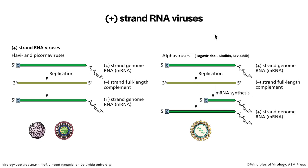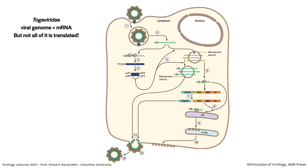The other set of plus-stranded RNA viruses I want to discuss is one where a subgenomic mRNA is actually made — the alphaviruses, including Sindbis virus, Semliki Forest virus, and Chikungunya virus. These are all plus-stranded RNA viruses. The genome is mRNA, but a subgenomic mRNA is also made.